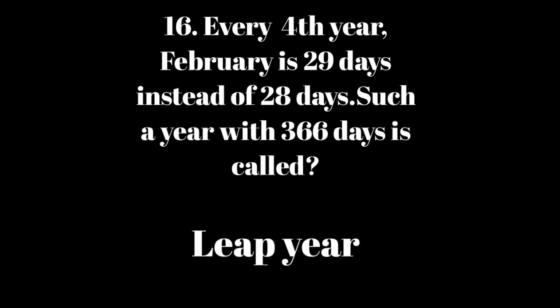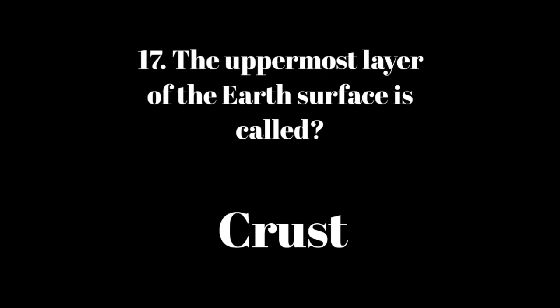Question 16: Every fourth year, February is 29 days instead of 28 days. Such a year with 366 days is called? Answer: Leap year. Question 17: The uppermost layer of the Earth's surface is called? Answer: Crust.